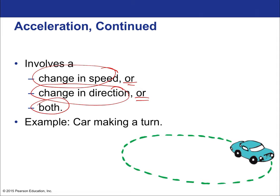A car making a turn at constant speed would still be accelerating. We know that because we would feel an apparent force throwing us to one side of the car — to the outside of the turn. That's because of inertia: you want to continue moving in the direction you were going, and there's nothing to stop your body from sliding in the direction inertia allows.